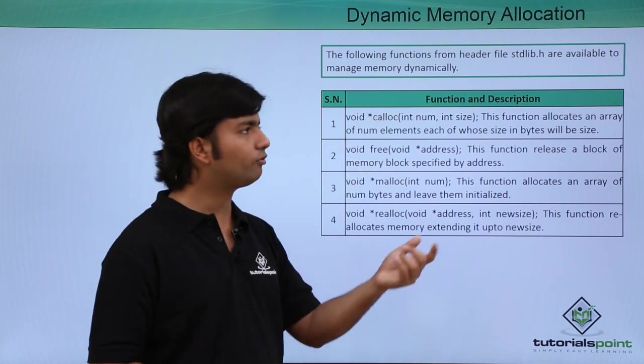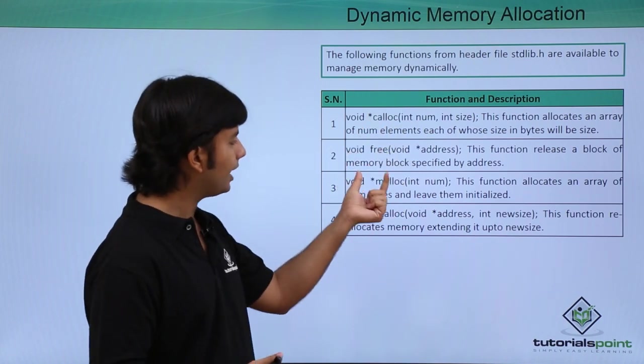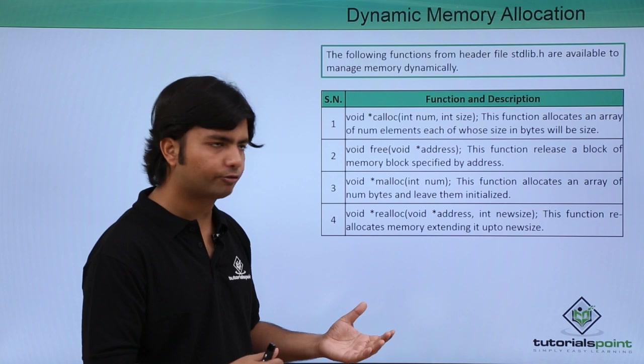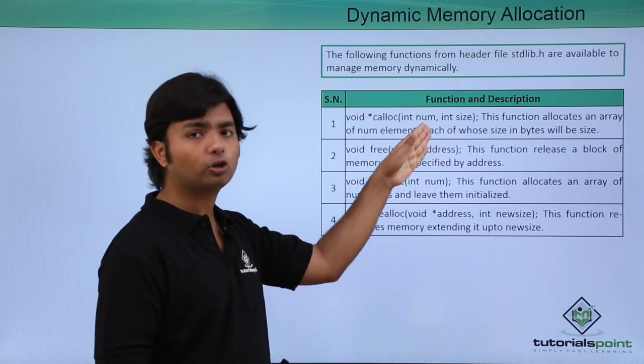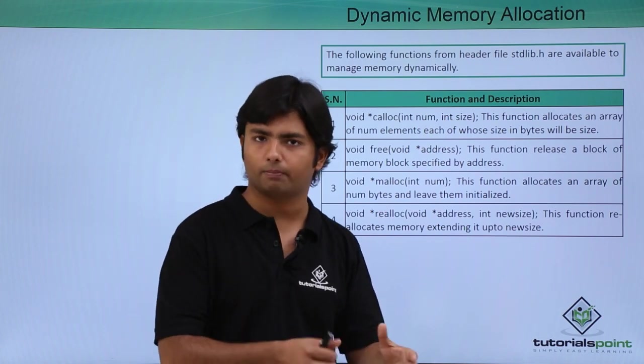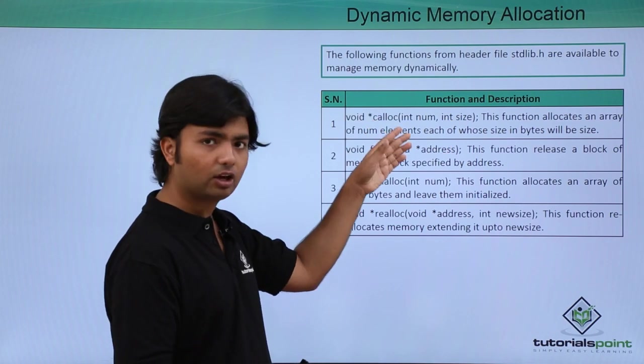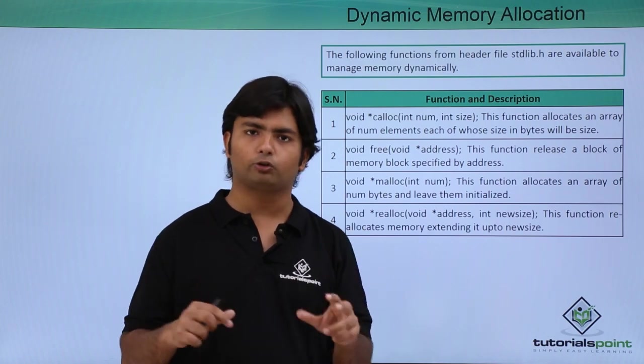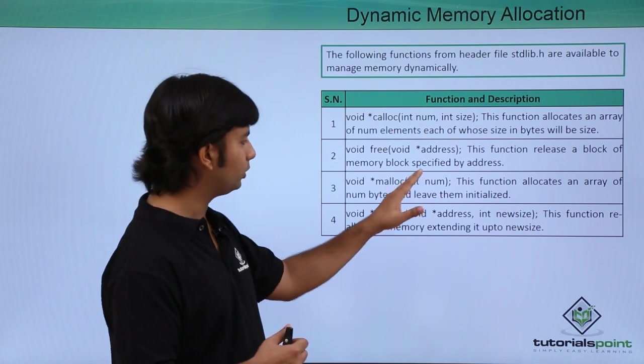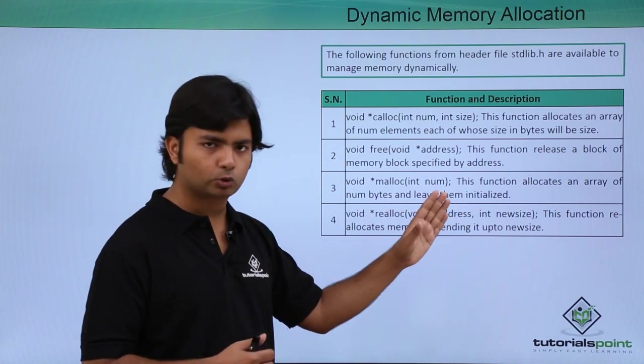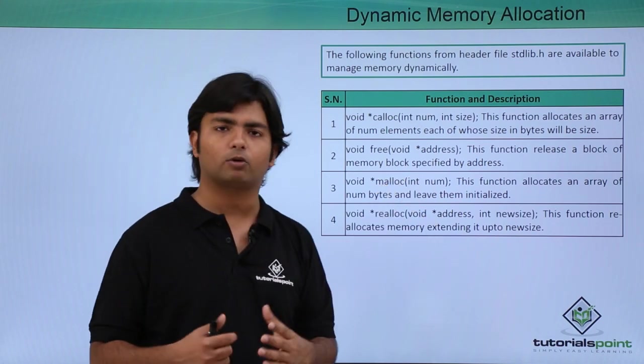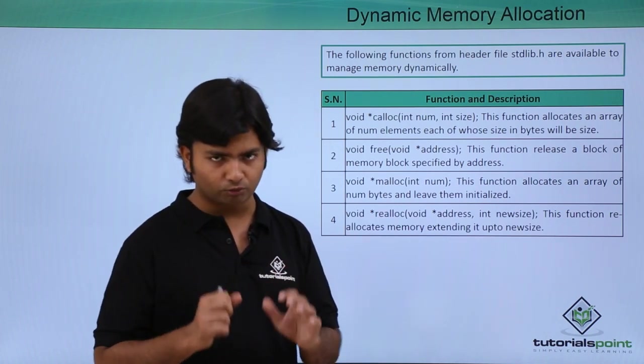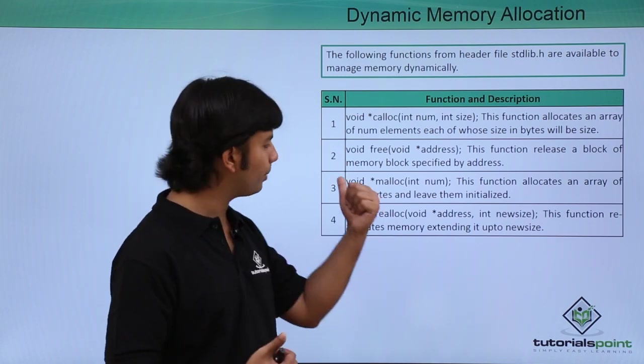For allocating memory, we have calloc and malloc. Calloc takes two arguments: how many blocks you want and the size of each block. Calloc also initializes all memory blocks with zero. Malloc, on the other hand, only requires the number of bytes you want to allocate. It doesn't initialize the memory, so it will contain garbage values.